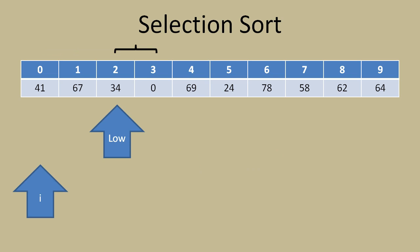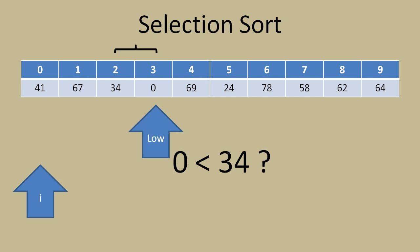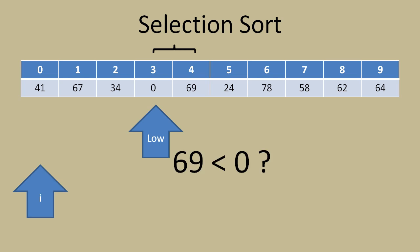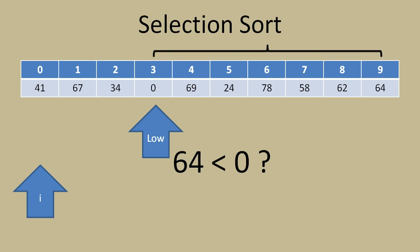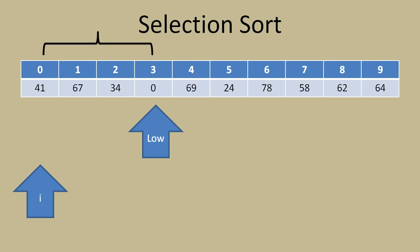Then we continue the comparisons. Now comparing low to the next value - is 0 less than 34? It actually is, so we move the low indicator to element 3 in the array. Then we compare the rest: is 69 less than 0? No. Looking ahead, we go through each remaining comparison and there will be no more values lower than 0. So we take the low and our original indicator and swap those two values to get the lowest value in the 0th element of the array.